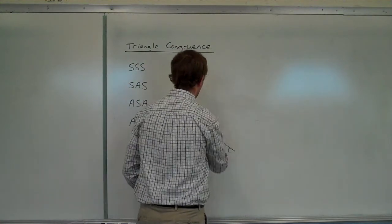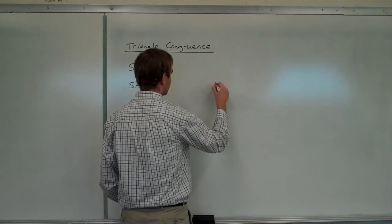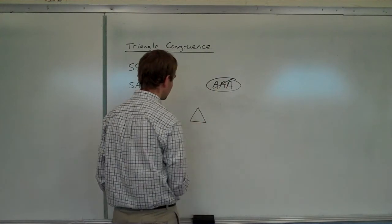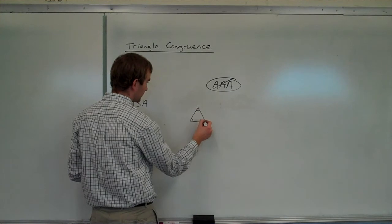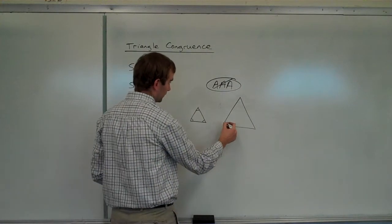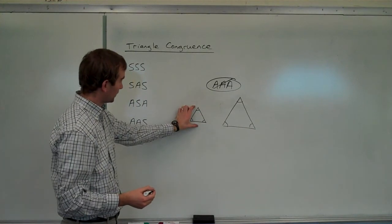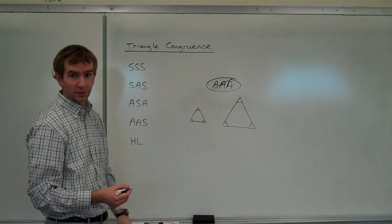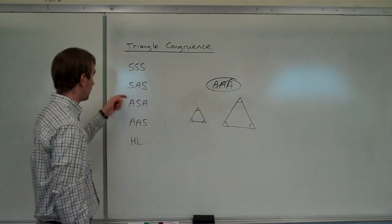The last one you might be tempted to use is Angle-Angle-Angle — but we can't use that either. Here's the easy way to see why: if this is an equilateral triangle, each of the three angles is 60 degrees. I could also draw a bigger equilateral triangle where again all three angles are congruent to the corresponding angles of the first. But clearly those are not the same triangle — one is bigger. These would be similar triangles, but not congruent. So no Angle-Angle-Angle — only use the valid ones.